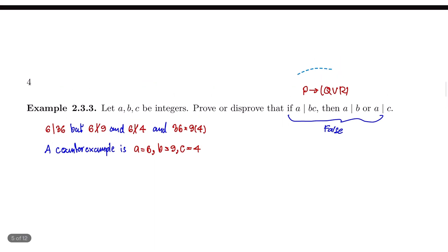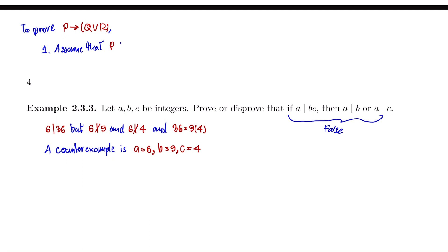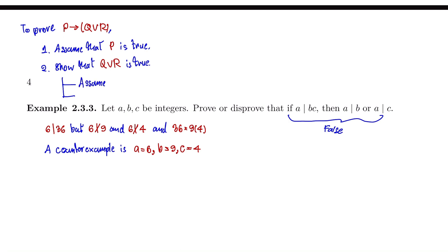So how to prove this statement? To prove this statement, number one, assume that P is true. Number two, try to show that Q or R is true. But this conclusion is connected by or, so the way to do it is to assume that not Q is true, then try to show that R is true.